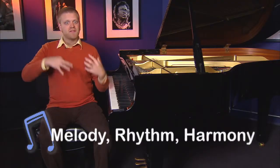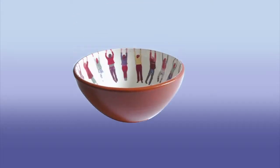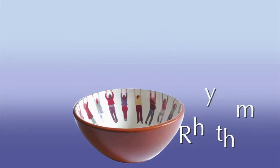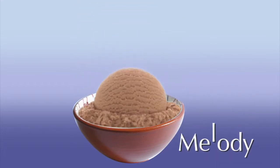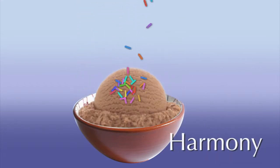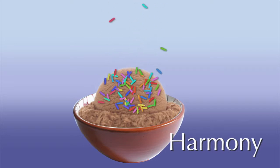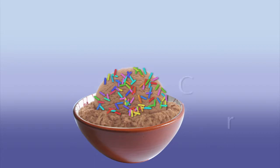If we think of music like a bowl of ice cream, the rhythm is going to be the bowl that holds everything together, the melody is going to be the actual ice cream, and the harmony is going to be the flavoring. And just like there are many different types of ice cream, there are many different options with harmony that we can put together to create new flavors, which we call colors.